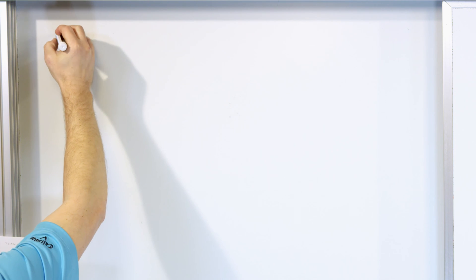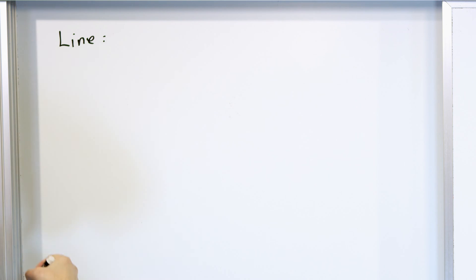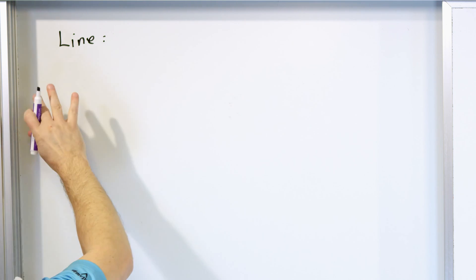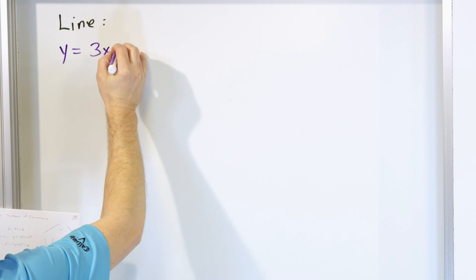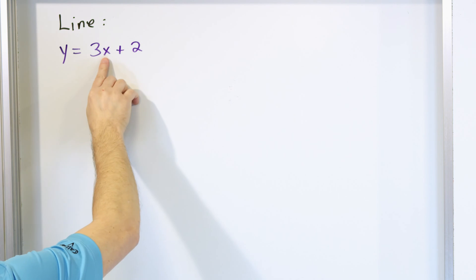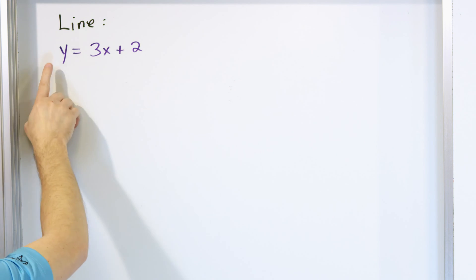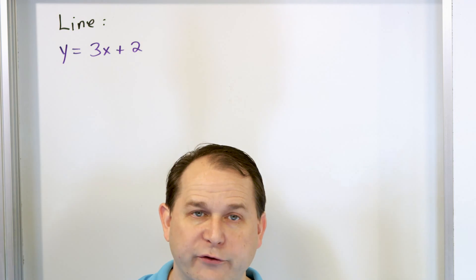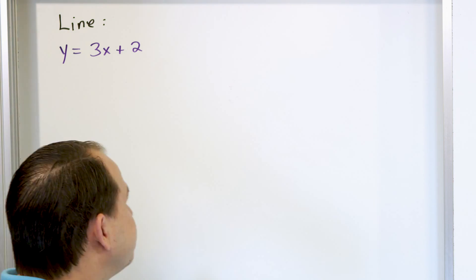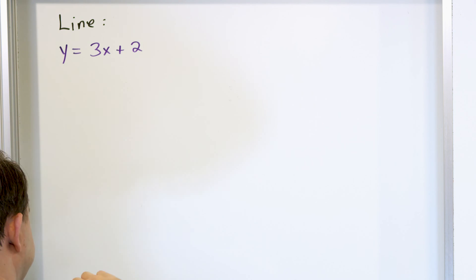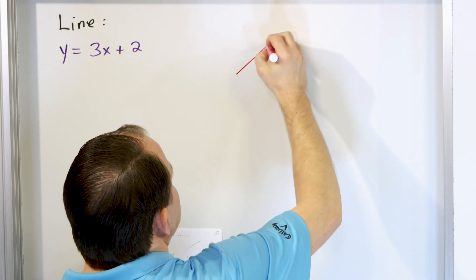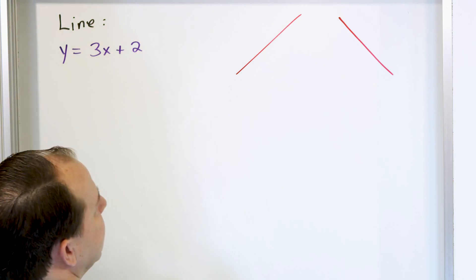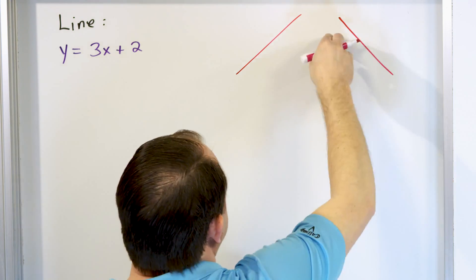Let's recall things we already know. A line might be something like y = 3x + 2. You know it's a line because the x term does not have a square or any higher power — same with y. If neither variable has squares or higher powers, it has to be a line. This is the y-intercept and this is the slope. Lines can slant up and to the right — a positive slope — or slant down to the right — a negative slope.